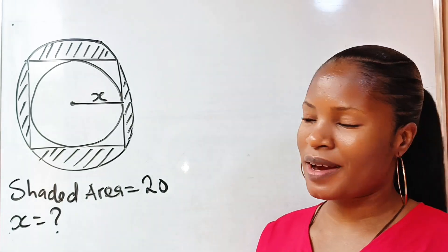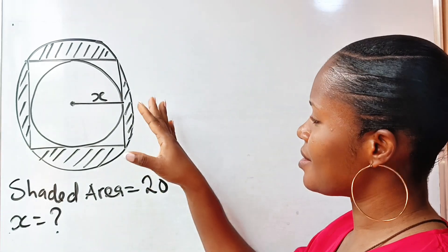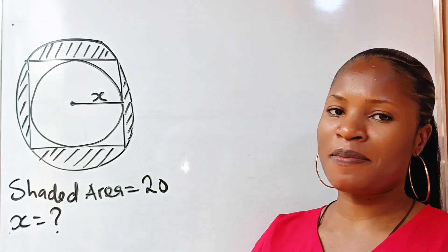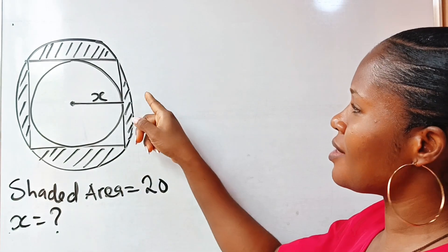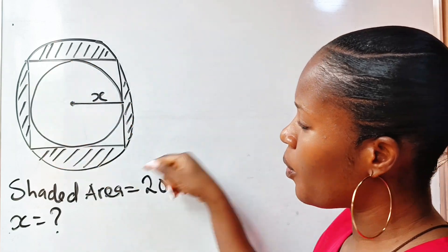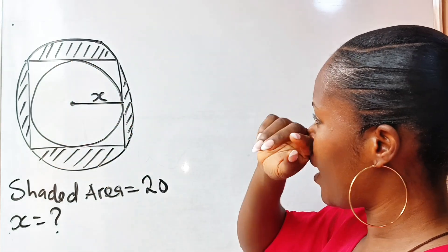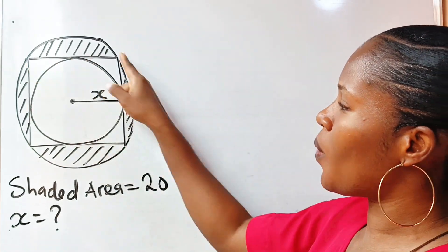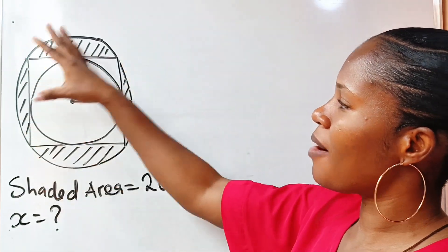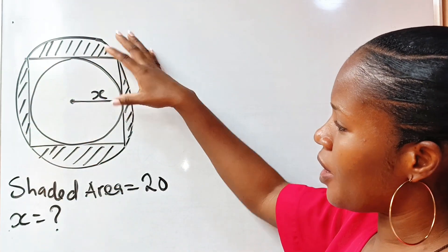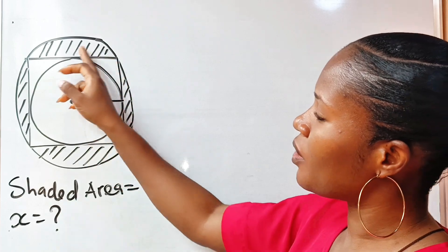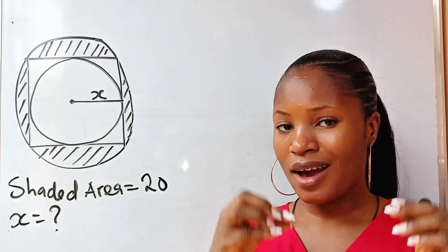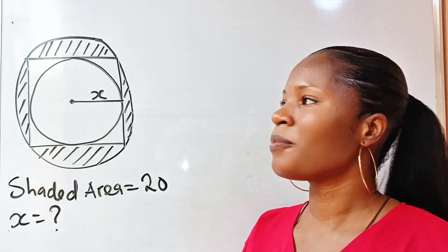Welcome back to my channel. Please, look at this diagram. This is a circle, and this square is inscribed inside this circle, and we have another smaller circle inscribed inside this square.